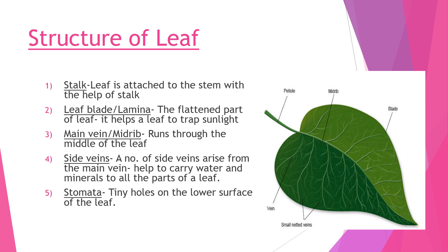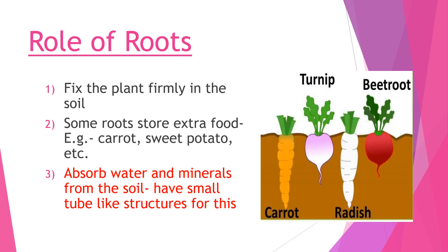Coming to the role of roots in the plant: we know that the plant is fixed firmly in the soil because the roots hold the soil tightly, allowing the plant to stand upright and also preventing soil erosion. In some plants like radish, carrots, and sweet potato, the extra food produced by the plant is stored in the roots and we eat these parts as food. But in the process of photosynthesis, the main role of roots is to absorb the water and minerals present in the soil, done with the help of tube-like structures present in the roots.